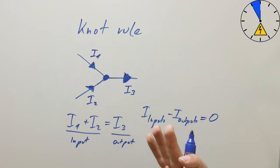And this is the knot rule or the first Kirchhoff's law. And yes, that is it. That is very important for analyzing network electrical circuits.